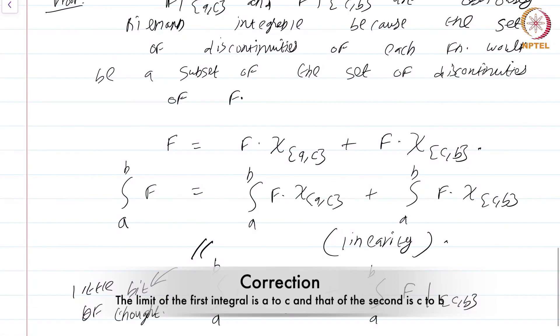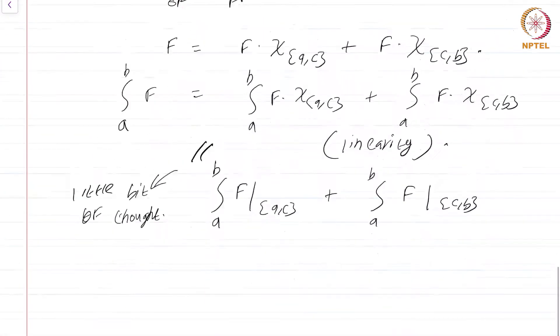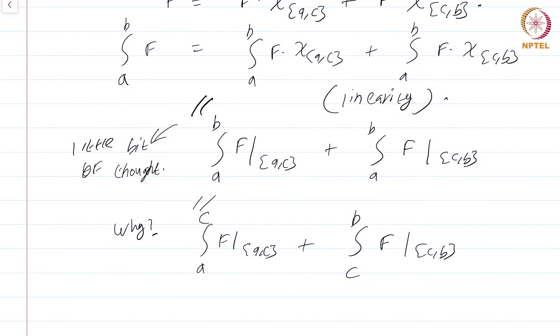Now the original proposition says its integral from a to c of f plus integral from c to b of f. That is rather easy to see. Integral from a to b of f restricted to [a,c] is actually same as integral from a to c of f restricted to [a,c] plus integral from c to b of f restricted to [c,b]. Why? Please check why this is true. Again this also requires just a little bit of thought.